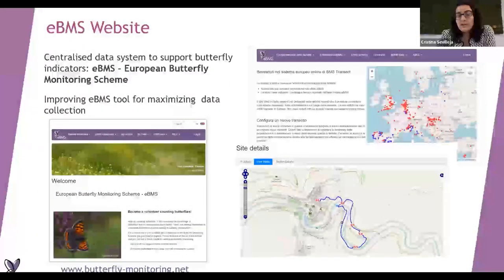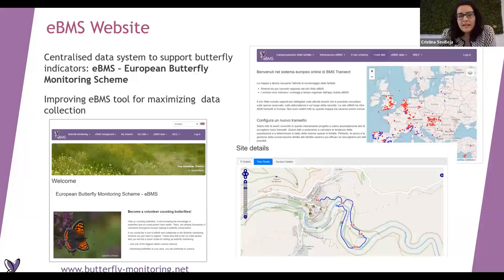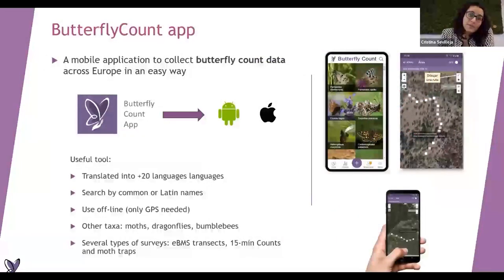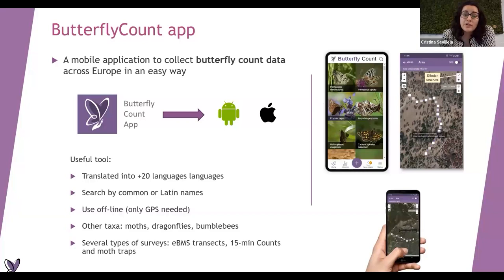This is the European Butterfly Monitoring Scheme website, available for the BMS schemes that want it. We have it translated in many different languages - no Slovakian yet, but we have Czech, so I don't know if it can be useful for you. In English you can see everything and investigate it. Here you can record your transect with different sections and put your data. We also have the Butterfly Count app, free to download for Android and iPhones, translated to many languages. You can search by scientific names or common names - quite handy. We have a small guide with pictures of butterflies, and we have also included dragonflies and bumblebees of Europe. You can use it offline.